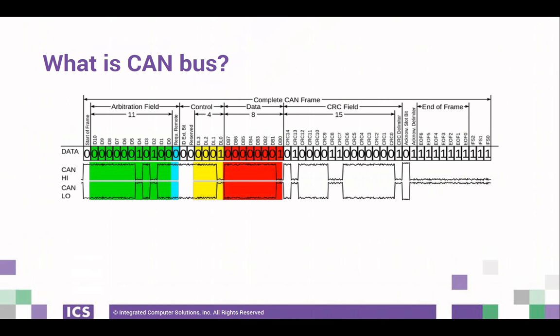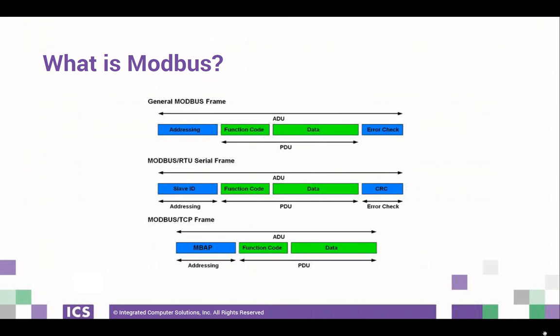Canbus is a serial communications protocol developed for vehicles. It's also used on a variety of embedded industrial applications, from assembly lines and medical machinery to building automation and access control installations. Underneath the dashboard of your car is an OBD connector which provides access to Canbus. A typical automobile today may have as many as 70 Canbus devices.